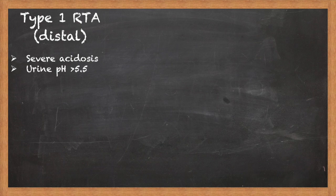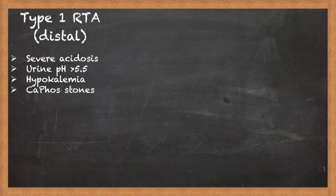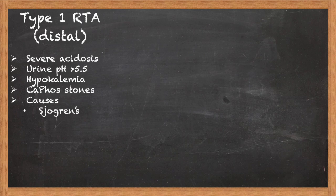The urine pH is often quite high in this type of RTA. Other important findings of a type 1 RTA include hypokalemia, which may often be quite severe. The exact mechanism for the hypokalemia is beyond the purpose of this review, but it involves electrochemical changes from the loss of proton secretion, as well as changes in serum aldosterone levels. These patients also have low urinary citrate, which in concert with the high urine pH increases the risk for calcium phosphate stones — stones that characteristically form in a higher urine pH. The major causes to be aware of for type 1 RTAs are autoimmune disorders, the major offender being Sjögren's syndrome, certain drugs like lithium or amphotericin, and urinary obstruction.